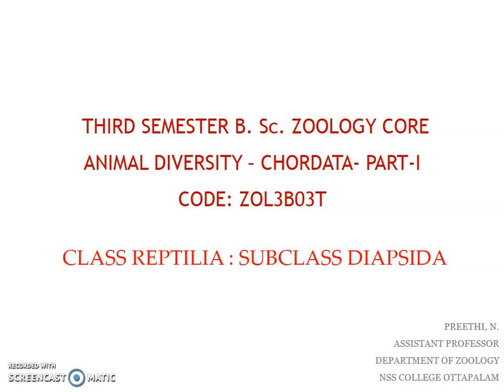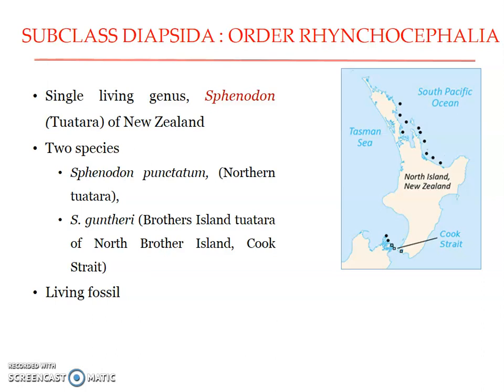Welcome to the next session on classification criteria for third semester, covering the core course on diversity. In this presentation, we will be looking at Order Rhynchocephalia and the subclass Diapsida. As already mentioned, all members of subclass Diapsida possess two temporal fossae on either side, and hence members of Order Rhynchocephalia also possess supra and infratemporal fossae on either side.